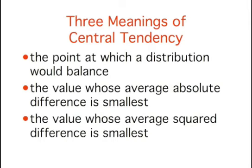In the section 'What is Central Tendency,' we discussed three ways to define the center of a distribution. One way is to define the center as the balance point of a distribution. The second definition is the value whose average absolute difference from all other values is smallest. The third is the value whose average squared difference from all other values is smallest.